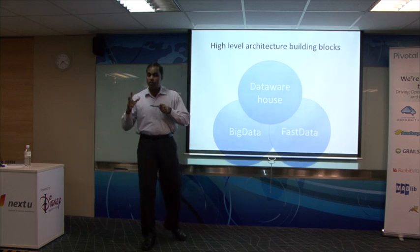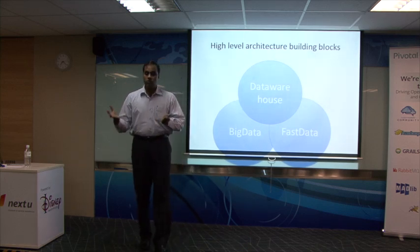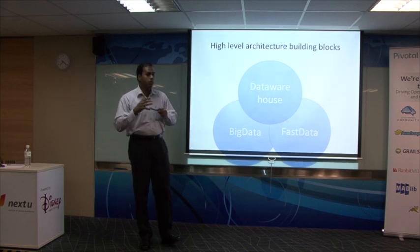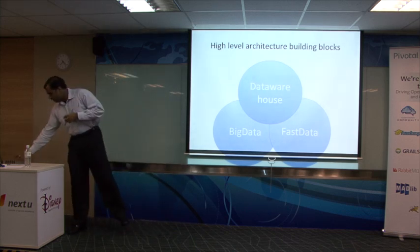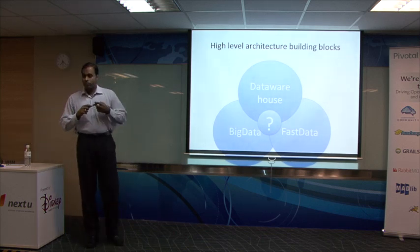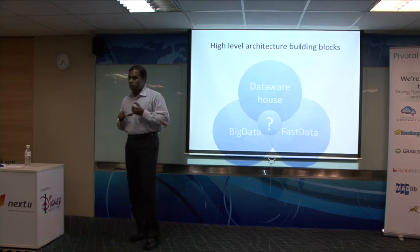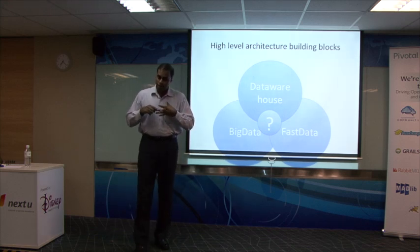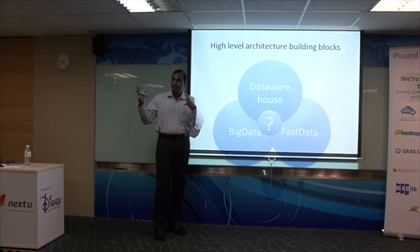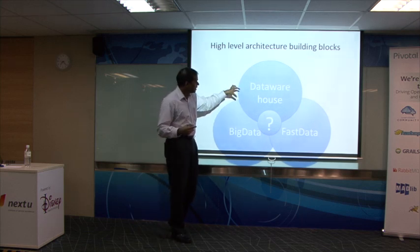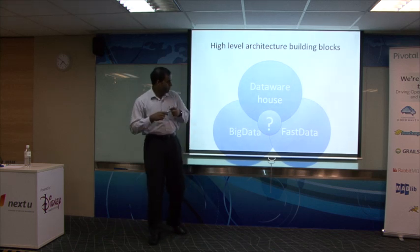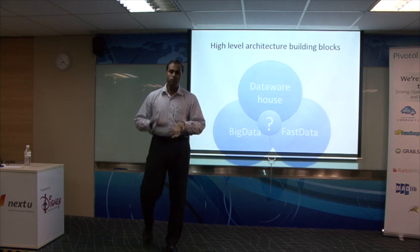What we're trying to see in this talk is: what is the common element you can use to tie the data warehouse, big data, and fast data together? The common element among all three is Hadoop. Companies like Pivotal, IBM, and Teradata have implemented products and platforms such that you can have one single platform handling all of data warehouse, big data, and fast data. There are these three architectural components, and there are platforms supporting them.